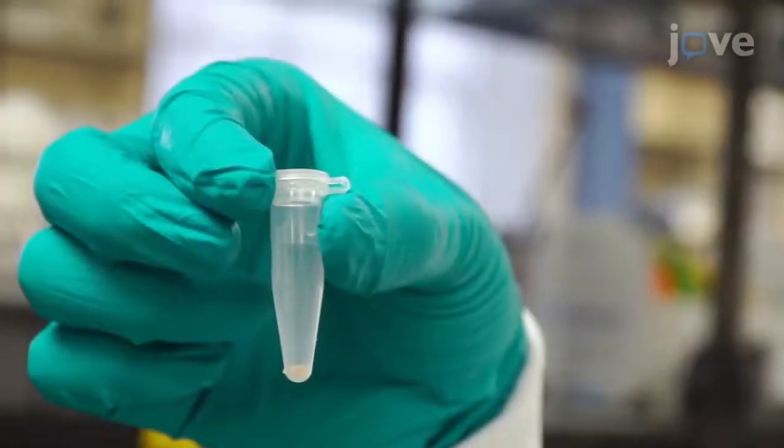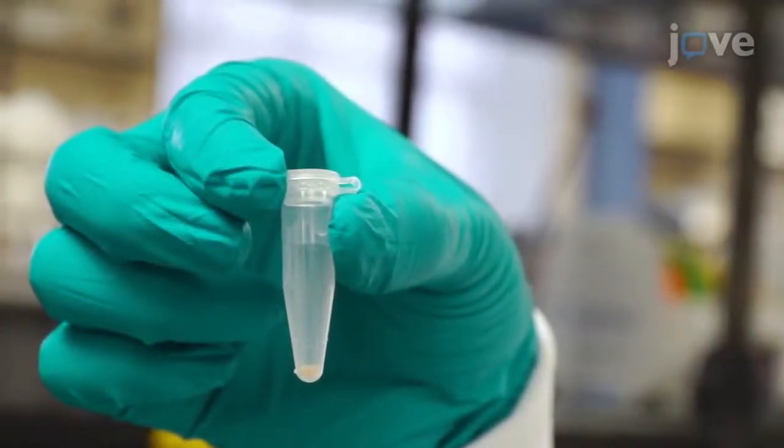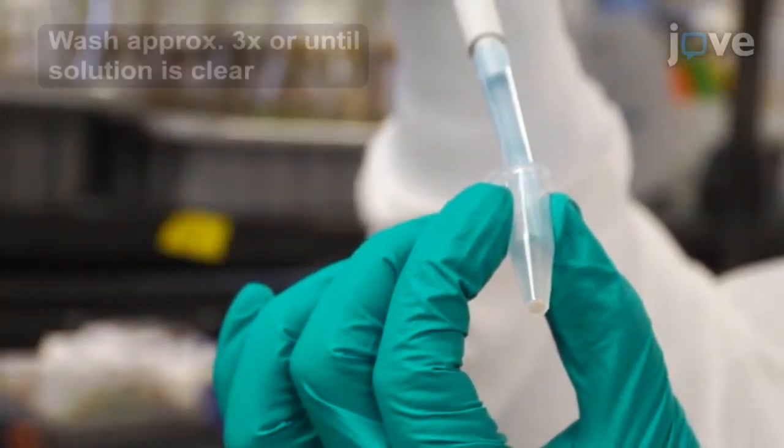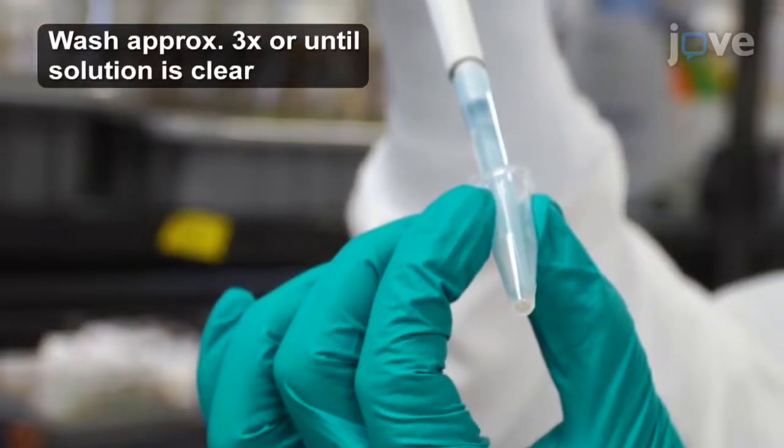The larvae will sink to the bottom of the tube, but the yeast will remain in suspension. Once all larvae have formed a loose pellet, remove the sodium chloride solution using a 1-milliliter pipette.